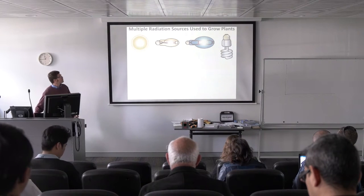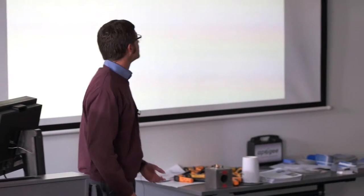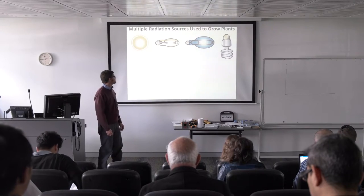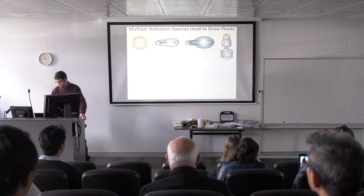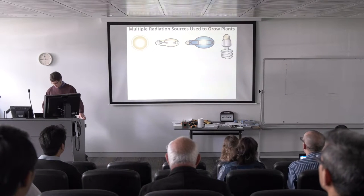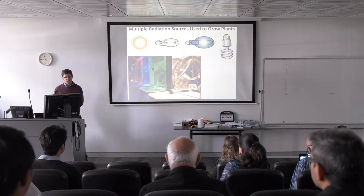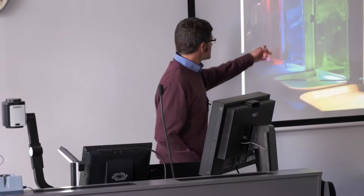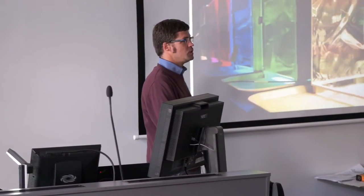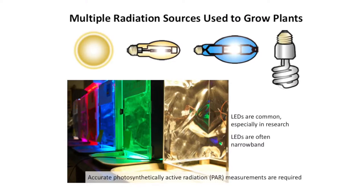There are multiple radiation sources used to grow plants — the Sun and lots of different electric lights. Nowadays LEDs, light emitting diodes, are becoming more and more common. This is actually a photograph taken from Bruce's lab at Utah State University. They've got all these little growth chambers, each one with a different colored LED or a different combination of colored LEDs, to see what kind of effects different color treatments have on plant growth and plant morphology.